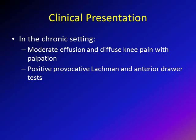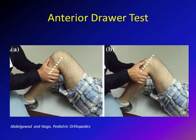In the chronic setting, you will find moderate effusion of the knee. With palpation of the joint line you may find mild tenderness. Most importantly, you will find a positive Lachman test and a positive anterior drawer test, which we are going to explain in detail.